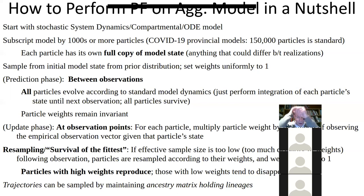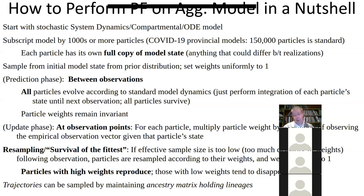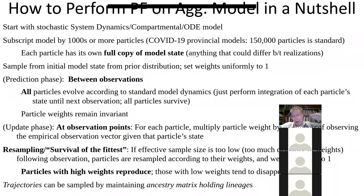What we do is we subscript the model. So each stochastic there — instead of just being 'susceptible,' we have a susceptible sub-1, a susceptible sub-2, susceptible sub-3. It's subscripted. And there's an I sub-1, I sub-2, I sub-3, and R sub-1, R sub-2, R sub-3. Susceptible sub-1 flows into I sub-1, and I sub-1 flows into R sub-1 — so the whole model is subscripted. It's like there are layers of this model where each layer has a separate version of the model, and they evolve as solitudes between observations. They don't care about each other — each particle evolves independently.